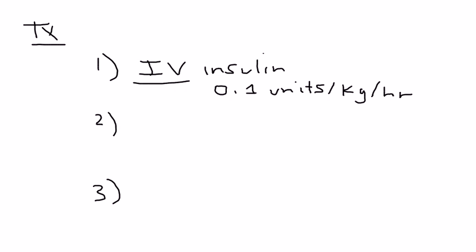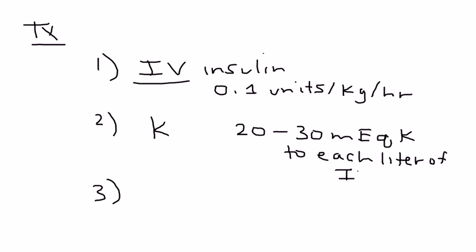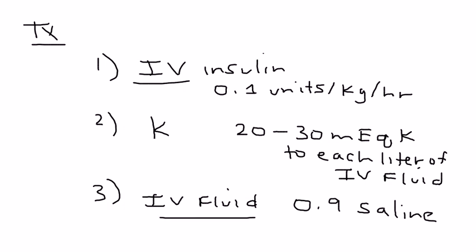And, then the next one, of course, is you want to correct the potassium. Because, in DKA, you're in a state of hypokalemia. So, potassium is given. Essentially, what you do is you add about 20 to 30 milliequivalents of potassium to each liter of IV fluids. And, that, of course, takes us to the third part of the treatment, which is IV fluids. And, initially, it's given as saline, 0.9 saline. And, this fluid is definitely needed to help replenish the volume and help the state of dehydration that DKA patients are in.